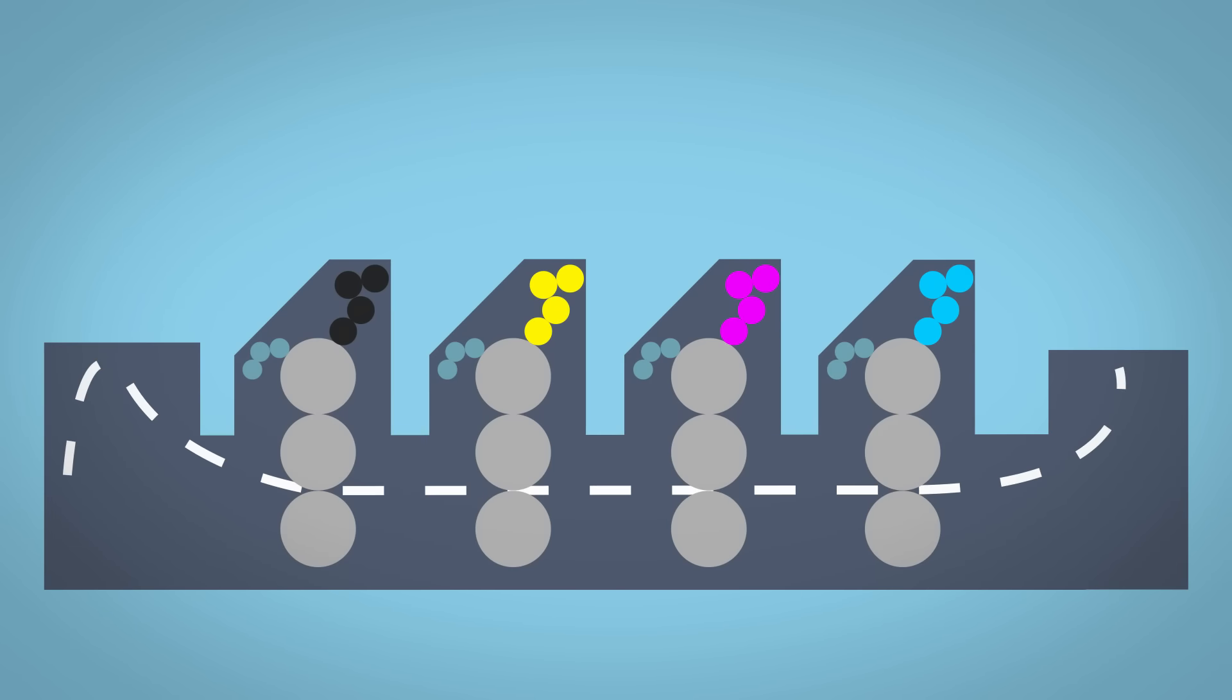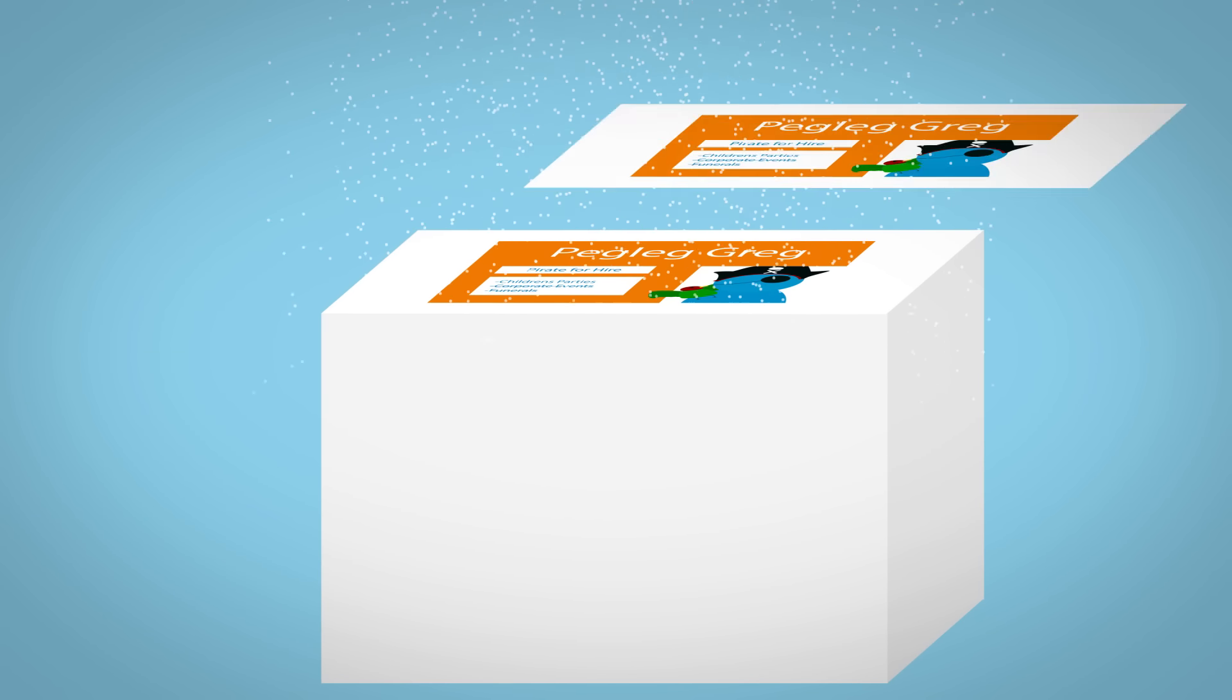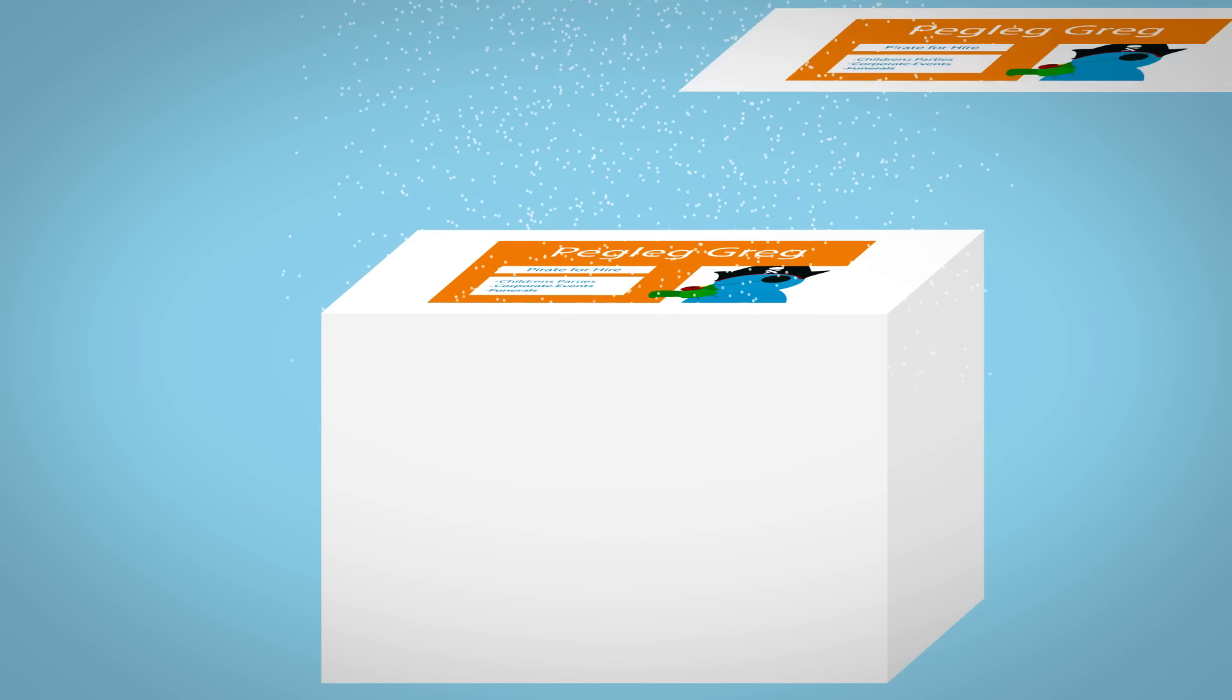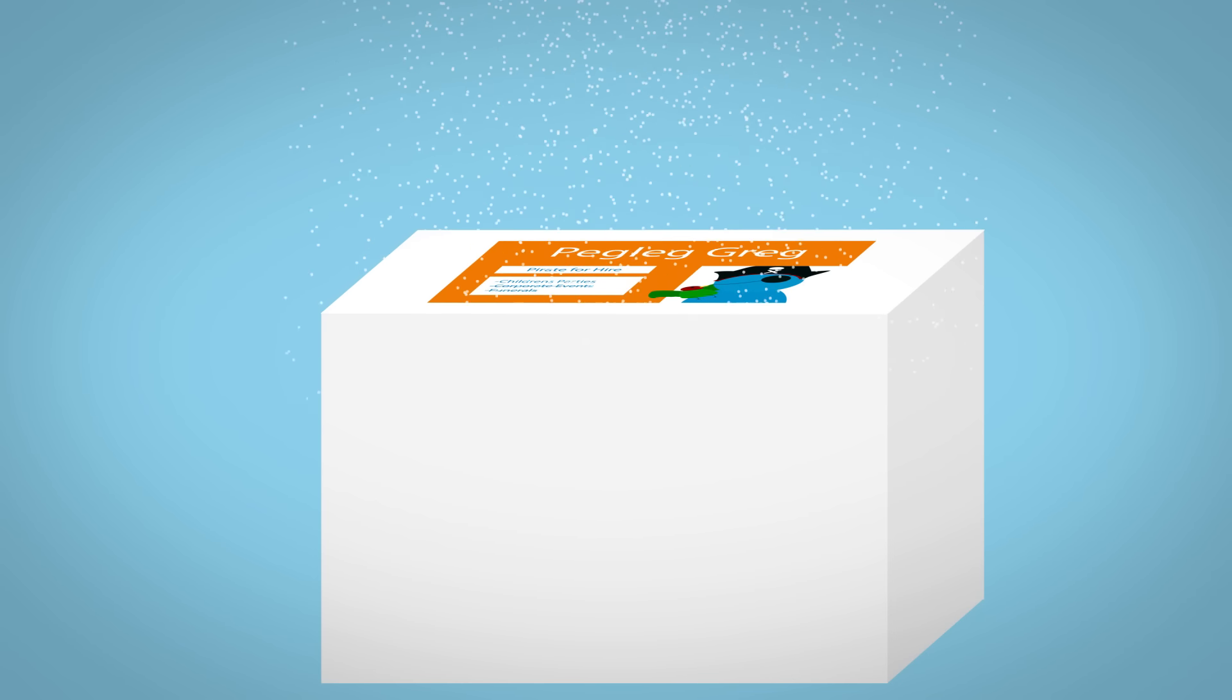After the page has traveled through each of the units, it is piled at the end of the press with a thin layer of powder separating each page, so that the printed image can dry without marking the pages above and below.